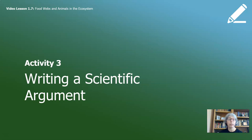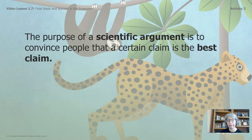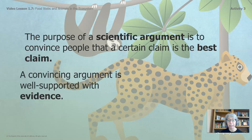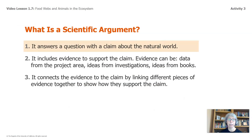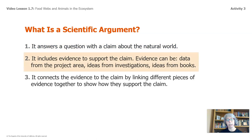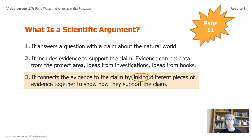We're going to move on to Activity Three and write a scientific argument. Remember, the best idea needs to be moved forward. The purpose of a scientific argument is to convince people that a certain claim is the best claim. A convincing argument is well supported with evidence. A scientific argument answers a question with a claim about the natural world, includes evidence to support the claim — such as data from the project area, ideas from investigations, or ideas from books — and connects the evidence to the claim by linking different pieces of evidence together. Page 11 of your packet gives you sentence starters to help.